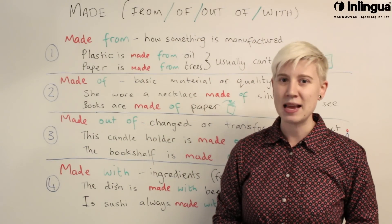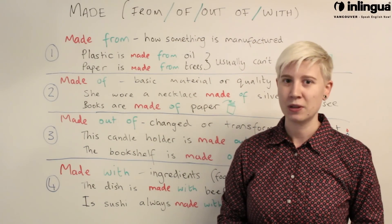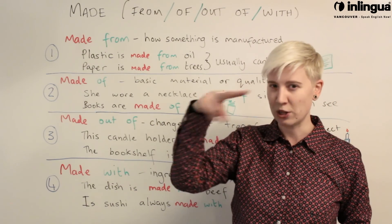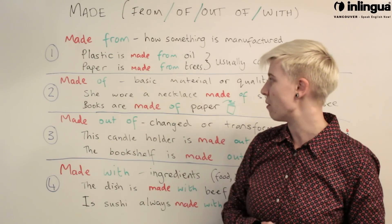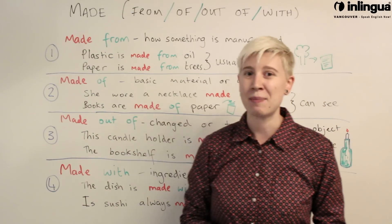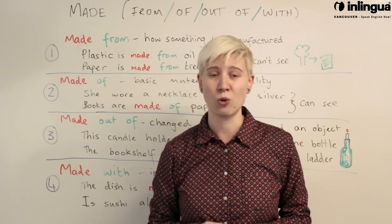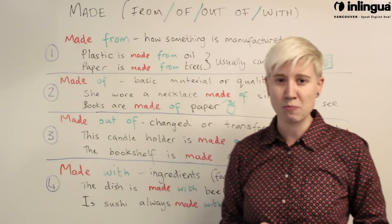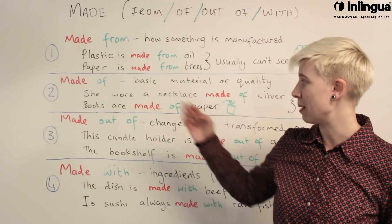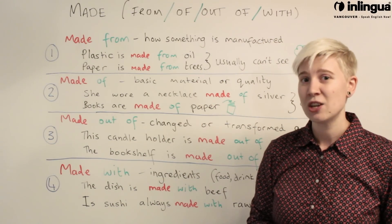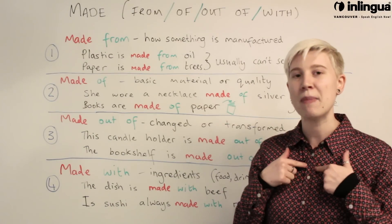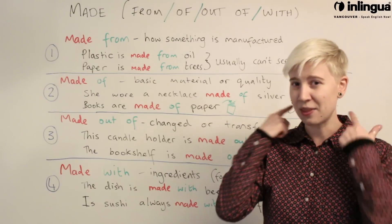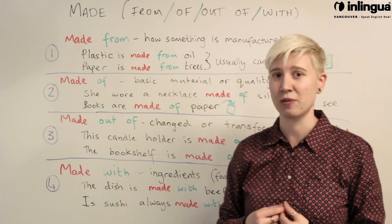Let's have a look at 'made of'. These two are really similar, so the key is to remember what you see. With 'made of' we're talking about the basic material or qualities of the material. We would use 'made of' when talking about a necklace, for example: 'She wore a necklace made of silver.' When I look at the necklace, I can see the silver.